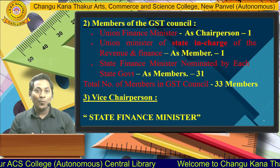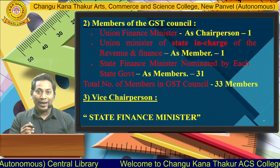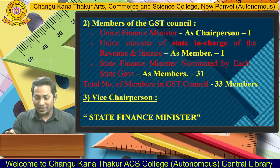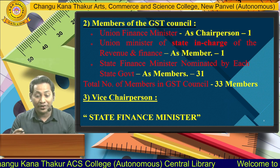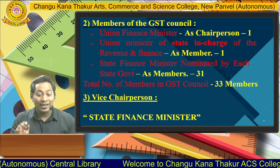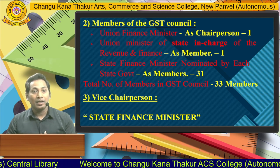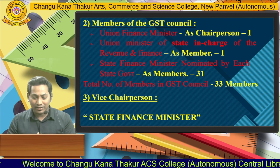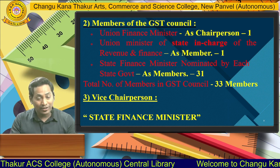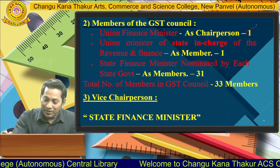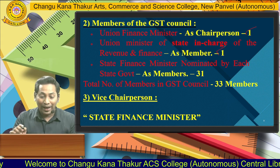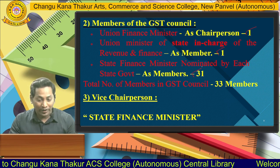How many members does the GST Council have? The first member is the Union Finance Minister as Chairperson. Second is the Union Minister of State in charge of Revenue and Finance as a member. Third, one State Finance Minister nominated by each State Government as a member — covering states like Maharashtra, Goa, Gujarat, Haryana, Chandigarh — totalling 31 State Finance Ministers. So, one Union Finance Minister, one Union Minister of State, and 31 State Finance Ministers from 31 different states.